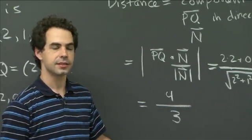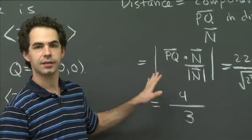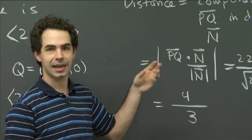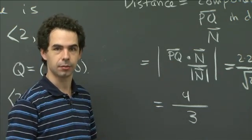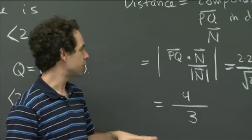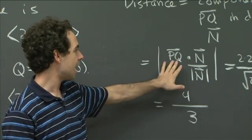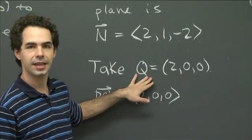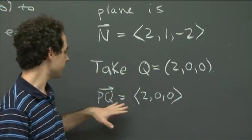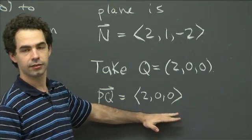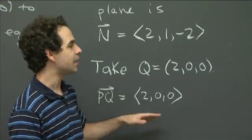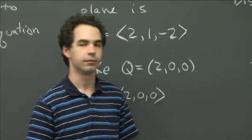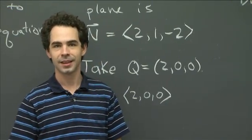So there we go — the distance in question is 4/3. The way we got it is we realized that the distance is just the component of any vector connecting our point P to the plane in the direction of the normal. You choose any vector PQ — you just need a point Q on the plane, which you can find by inspection from the equation. That gives you a vector from P to some point on the plane, and then you take the component in the normal direction to get the distance.